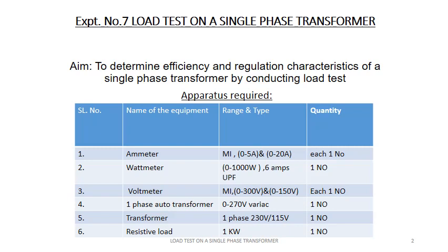Autotransformer: In the auto transformer, the primary and secondary windings are connected magnetically as well as electrically. In fact, a part of the single continuous winding is common to both primary and secondary.